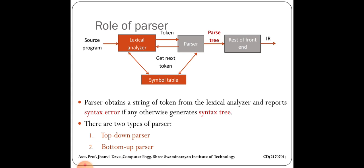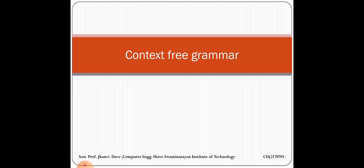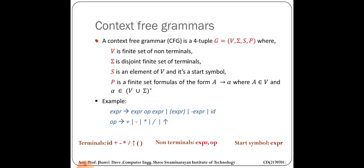The parser is of two types: top-down parser and bottom-up parser. Before discussing these, we will discuss what context-free grammar is. Context-free grammar is nothing but a quadruple of V, Sigma (also written as T), S, and P — where V is a set of non-terminals or variables.